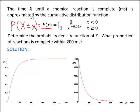Right, the chemical reactions aren't going to be complete in negative times. So for x is less than 0, we have 0 probability.